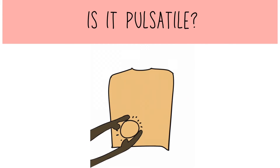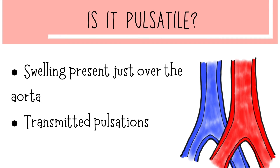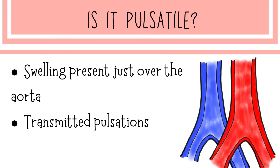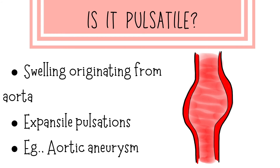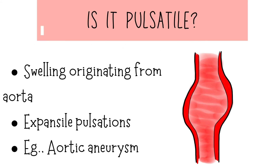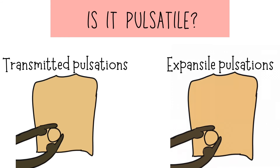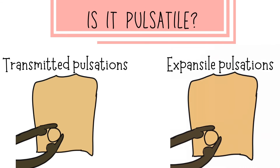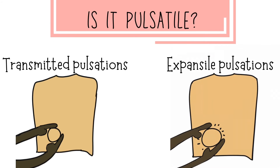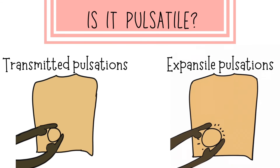We have to assess whether the swelling is pulsatile or not. There are two types: transmitted pulsations, seen when the swelling is present just above the aorta and aortic pulsations are transmitted through it; and expansile pulsations, where the swelling originates from the aorta itself, as in aortic aneurysm. To differentiate, place the index fingers of both hands on the sides of the swelling. In expansile pulsation, the fingers move away from the swelling, whereas in transmitted pulsation, pulsations are felt but the fingers do not move apart.